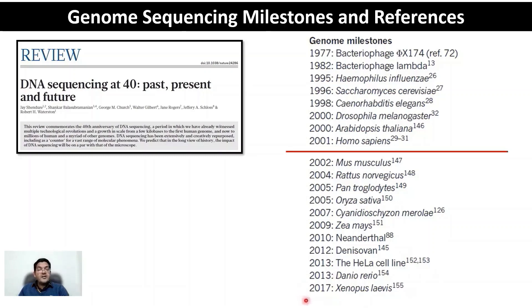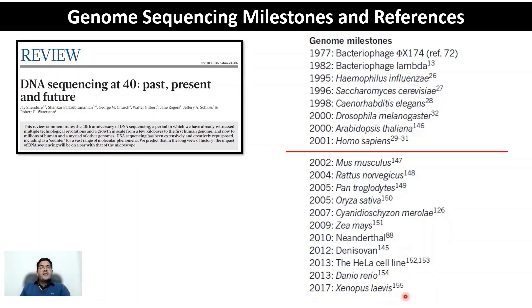By the end of 2017, we were able to sequence a genome roughly 10 times larger than the human genome — Xenopus laevis — along with some reference papers.